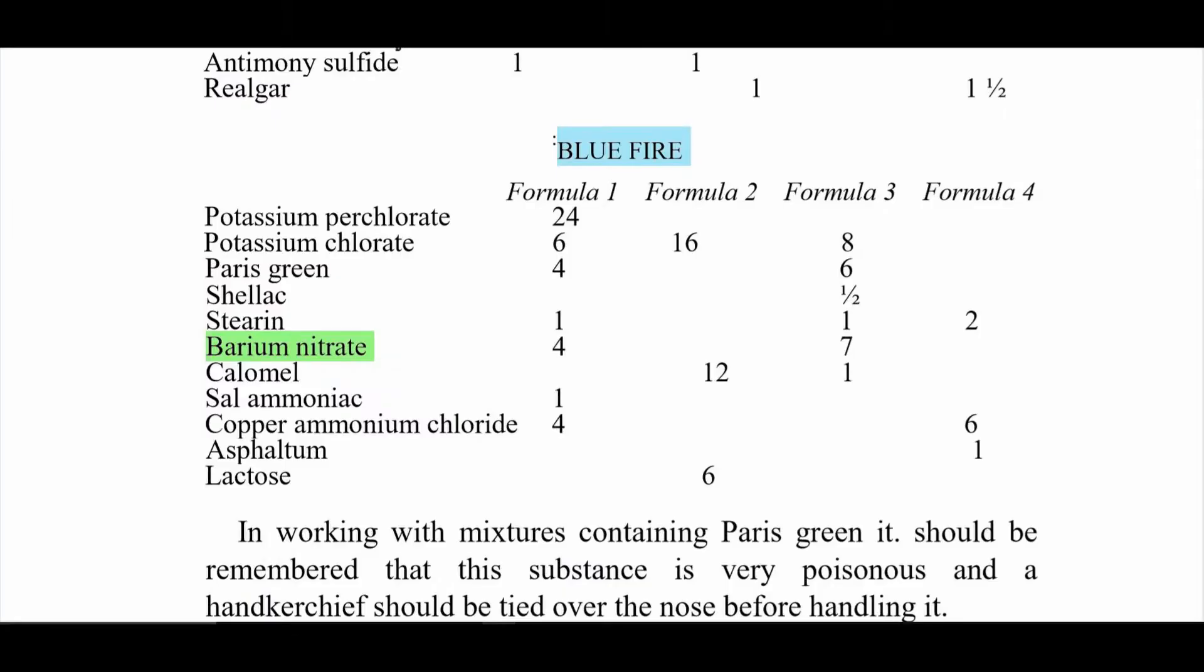Let's rewind to the absolute madman Weingart's blue fire table. What have we here? Barium nitrate. What color does barium nitrate burn in the presence of calomel? Green. Maybe Weingart wasn't as crazy as he seemed.